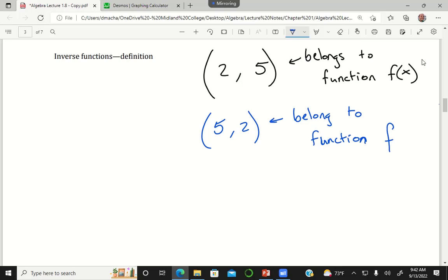And the notation we use to talk about inverse functions is we use a little superscript negative 1. So whenever you see this f with the superscript negative 1 of x, you would read it as f inverse of x. That's just denoting we're looking at the inverse function.